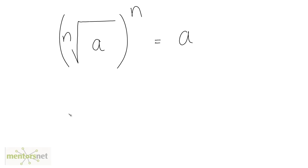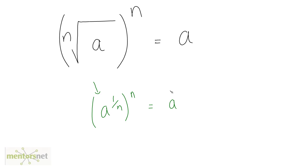The next law: if you have nth root of a raised to n then it equals a. To prove this, we write nth root of a as a raised to 1 by n, and this is completely raised to n. Using the law of indices where a raised to m raised to n equals a raised to m times n, we get a raised to 1 by n times n, and that n cancels out, leaving just a.